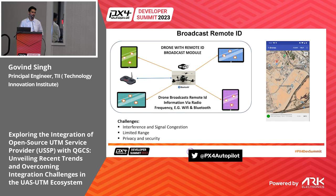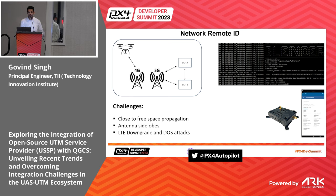In IETF there is a working group called DRIP that is trying to solve some of the privacy concerns by suggesting lightweight encryption for signing messages and improving reliability. For network remote ID, the concept is the same but instead of broadcast, you use an always-on network capability — internet connectivity — to directly submit to the USSP using LTE, 3G, 4G, 5G, or beyond. However, there are challenges with network remote ID as well, based on our prototyping with an NB-IoT and LTE Cat-4 module.